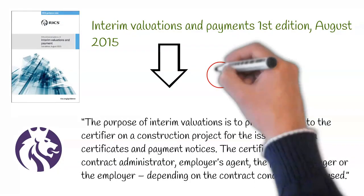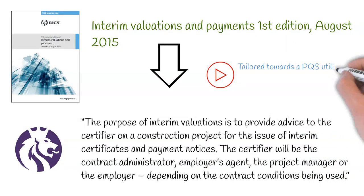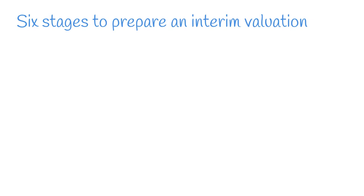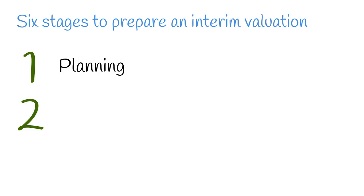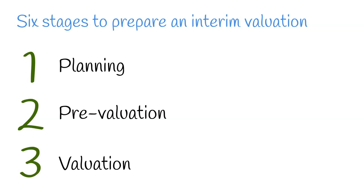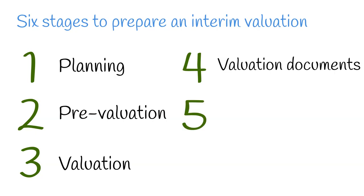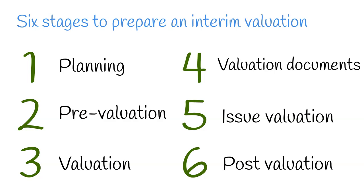This video is tailored towards a PQS utilising a JCT contract, however the below steps should be adhered to where possible to the contract being used. There are six stages to prepare an interim valuation. These include Stage 1: Planning, Stage 2: Pre-Valuation, Stage 3: Valuation, Stage 4: Valuation Documents, Stage 5: Issue Valuation, and Stage 6: Post-Valuation.